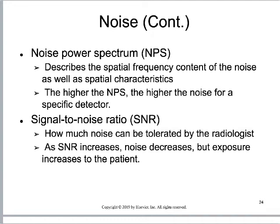One way to think about signal-to-noise ratio: imagine going out to the patient waiting room to bring back a patient, and the television is really loud while the patient is talking very quietly. I cannot hear the patient's quiet voice over the noise of the TV — that would be a low signal-to-noise ratio. Versus if the television is still loud but the patient is yelling, chances are I can still hear them — that would be a high signal-to-noise ratio. It would be even higher if I could turn down the volume on the TV.